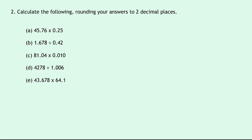Question two this time says to calculate the following rounding your answers to two decimal places, so we're looking at two decimal places rather than one this time. Part A says 45.76 times 0.25. If we put that into our calculator, you should get 11.44. It just spits it out as 11.44 anyway, so we don't need to do any rounding there because it's already at two decimal places.